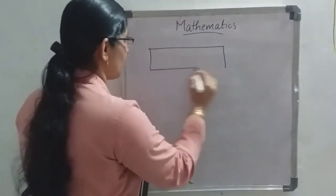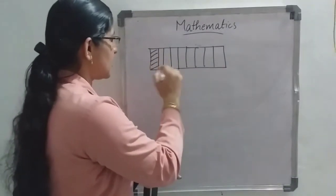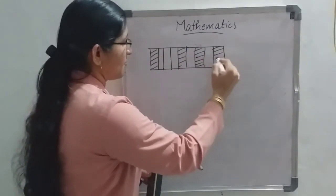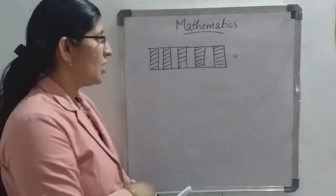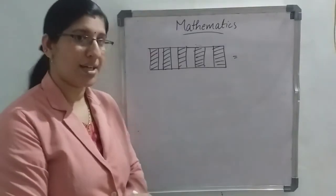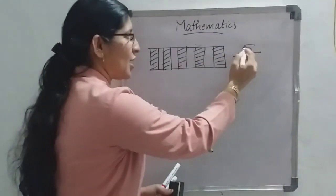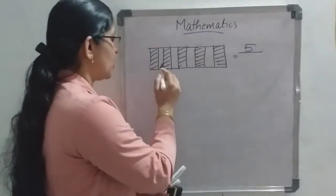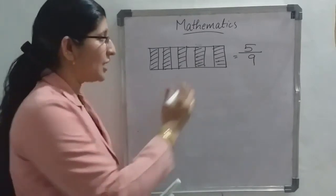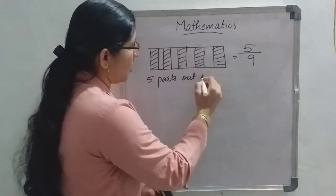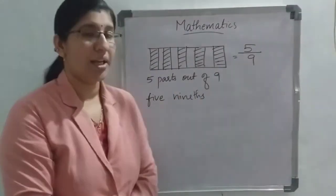Suppose I drew a shape and took some pieces. How to write the fraction of the shaded part of this picture? First, count how many parts are shaded: 1, 2, 3, 4, 5 — five parts are shaded, so 5 is the numerator. Then count the total number of parts: 1, 2, 3, 4, 5, 6, 7, 8, 9. So 5 by 9 is the fraction. We can also say '5 parts out of 9,' or '5 ninths.' These are the 3 methods of writing a fraction.